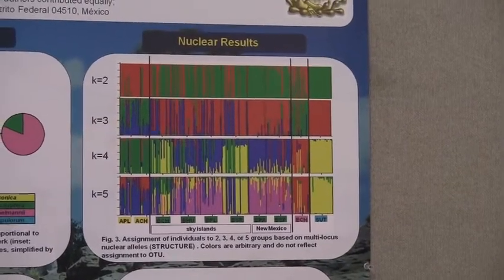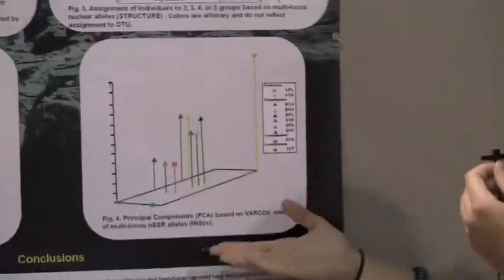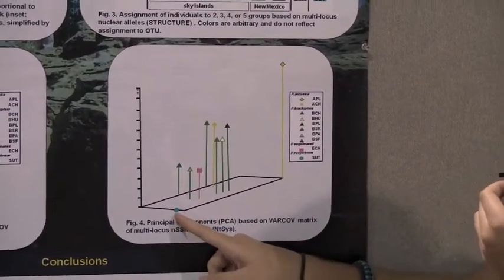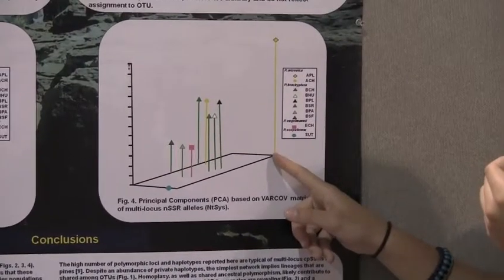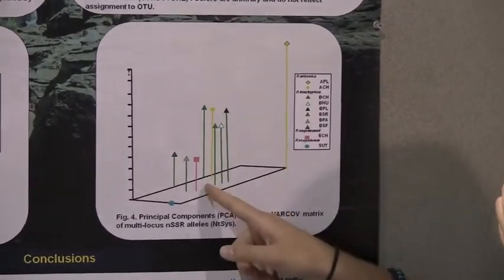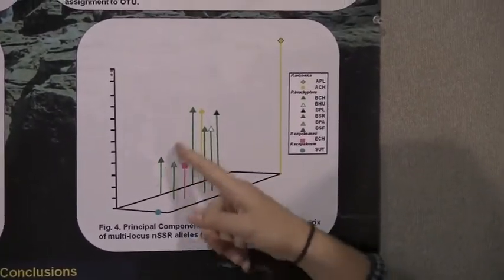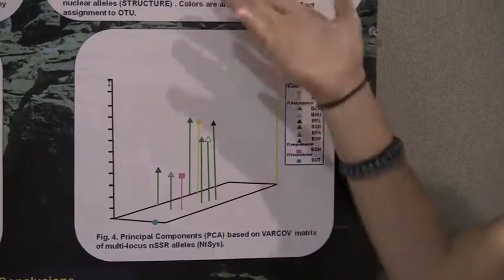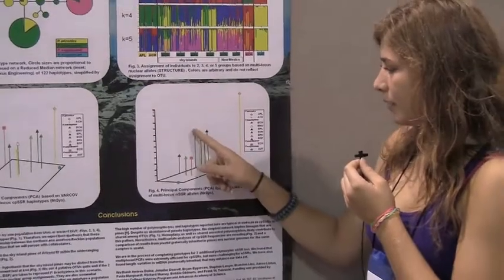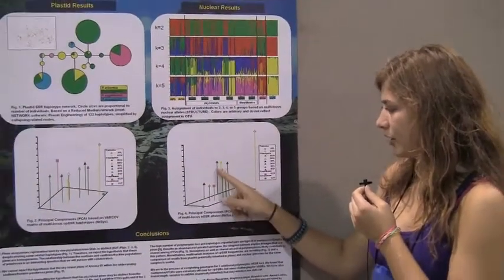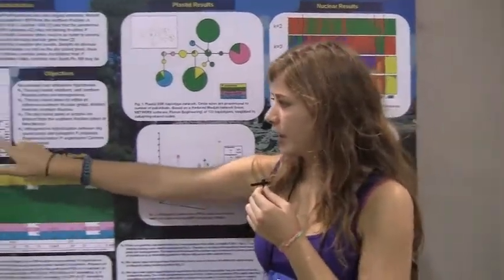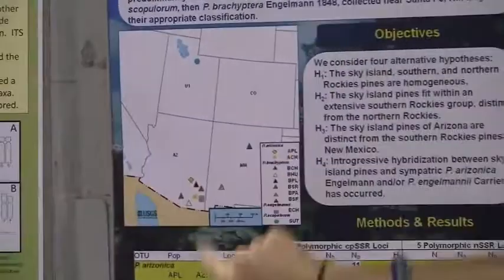For our nuclear PCA, also variance-covariance matrix, we can see that Pinus Scopularum and one of the Pinus Arizonica populations are separated, but the other Pinus Arizonica and the Pinus Engelmanii are mixed in here with the Pinus Brachyptera as the structure reflects. We can also see that the pines from the Sky Islands here, these Brachyptera, are separated from the ones of New Mexico. As shown on the map, they are separated in geographic distance.